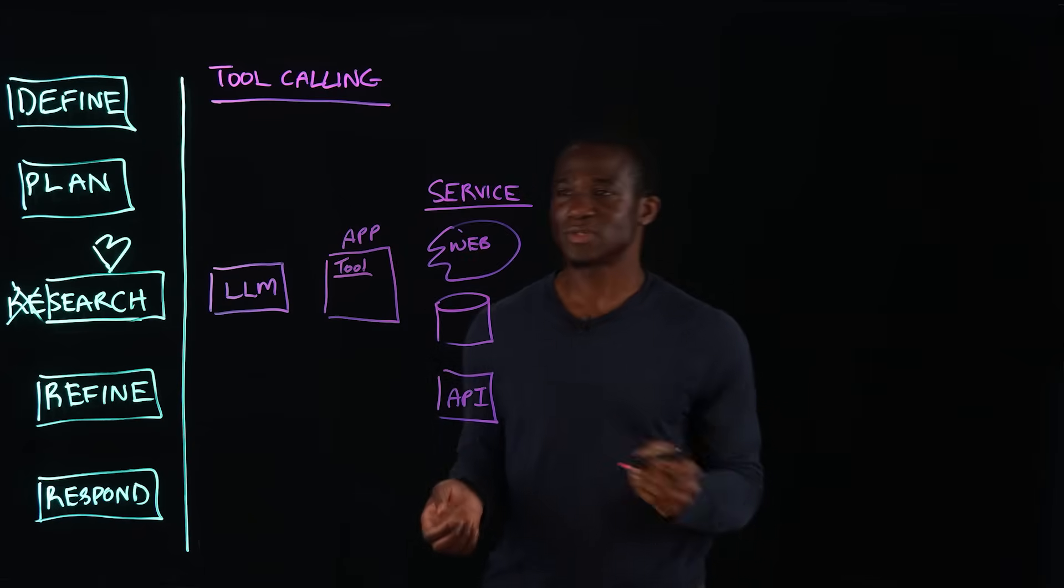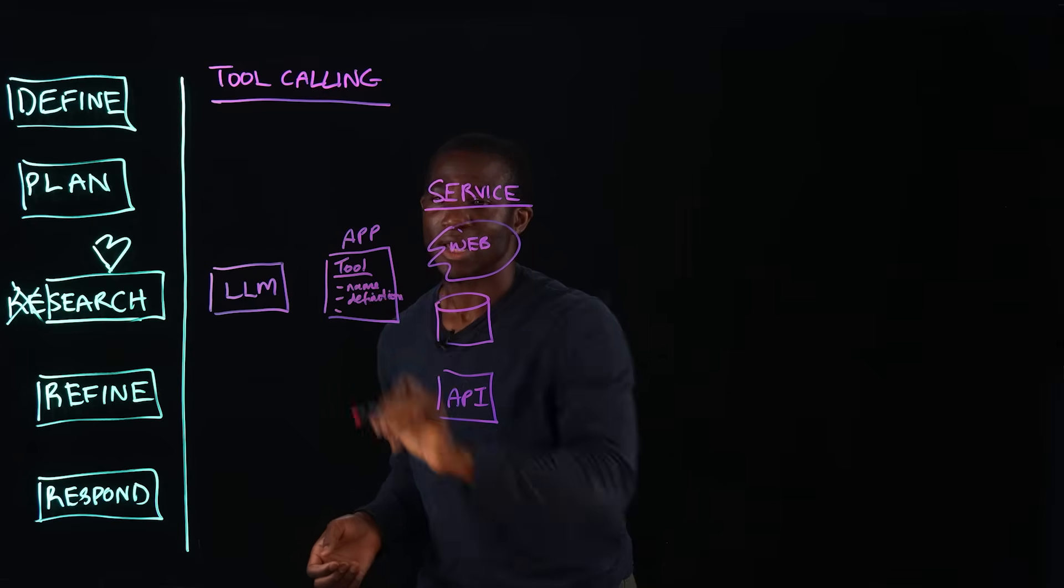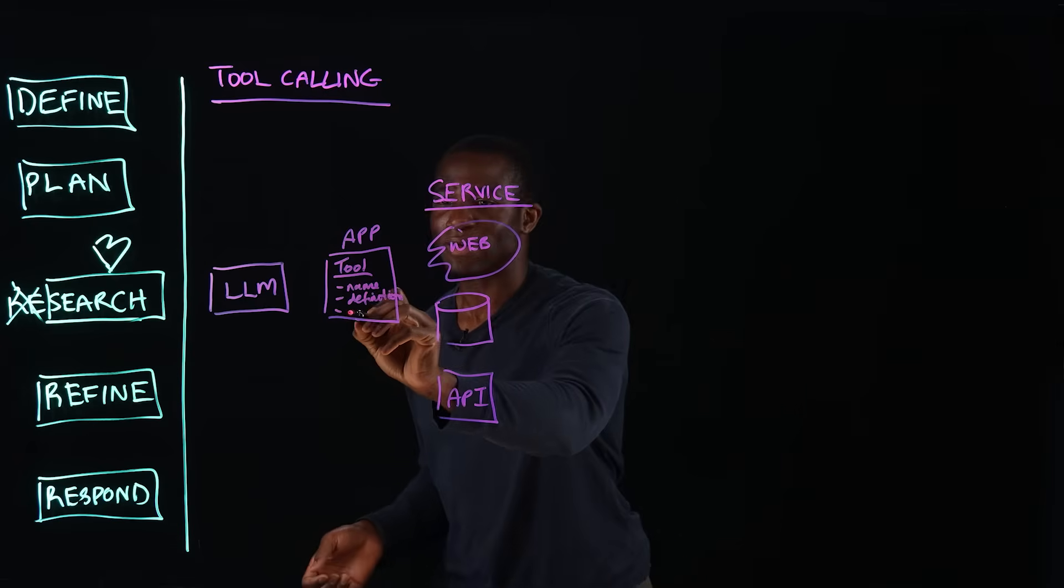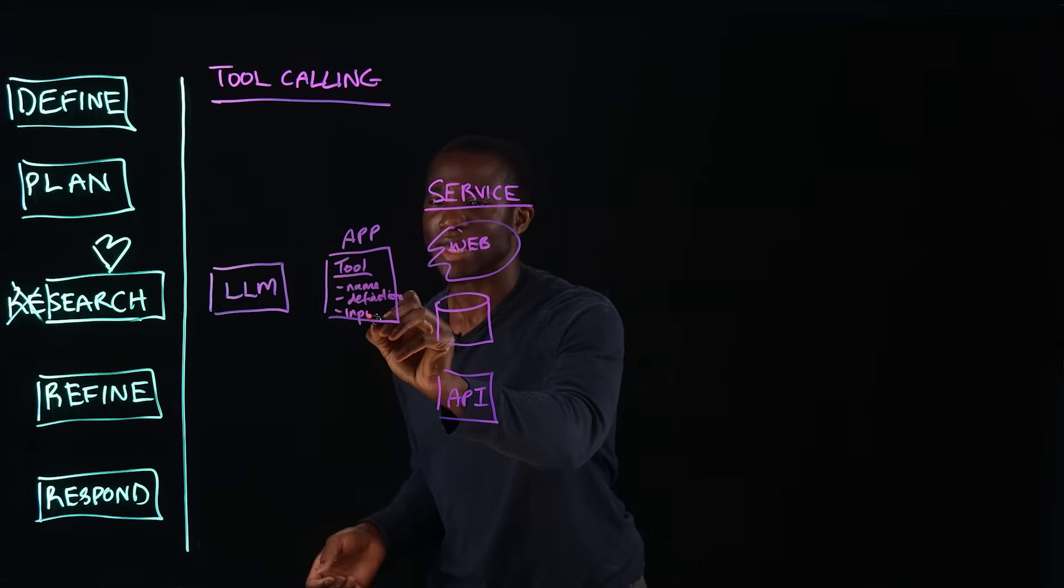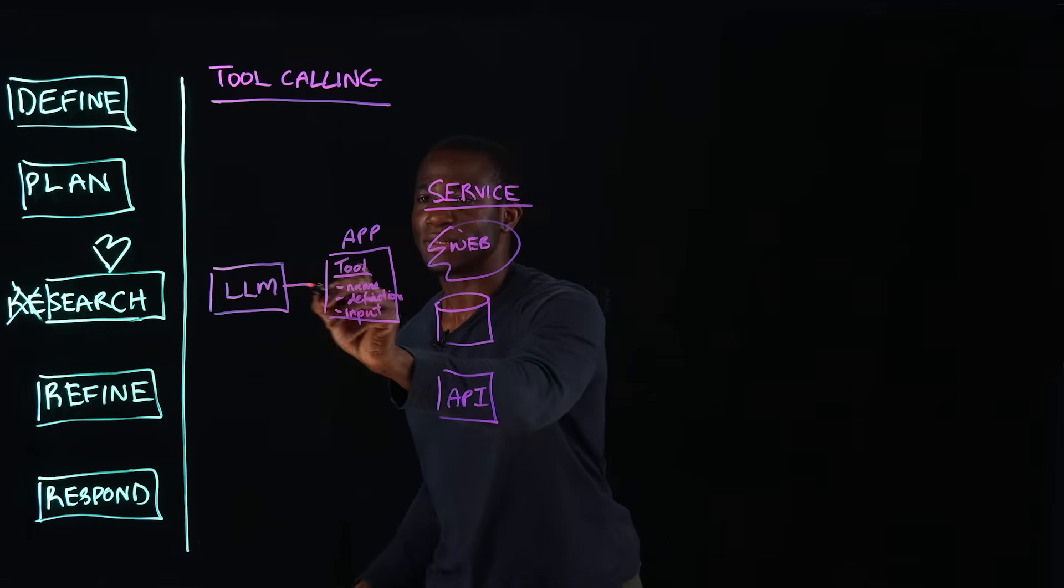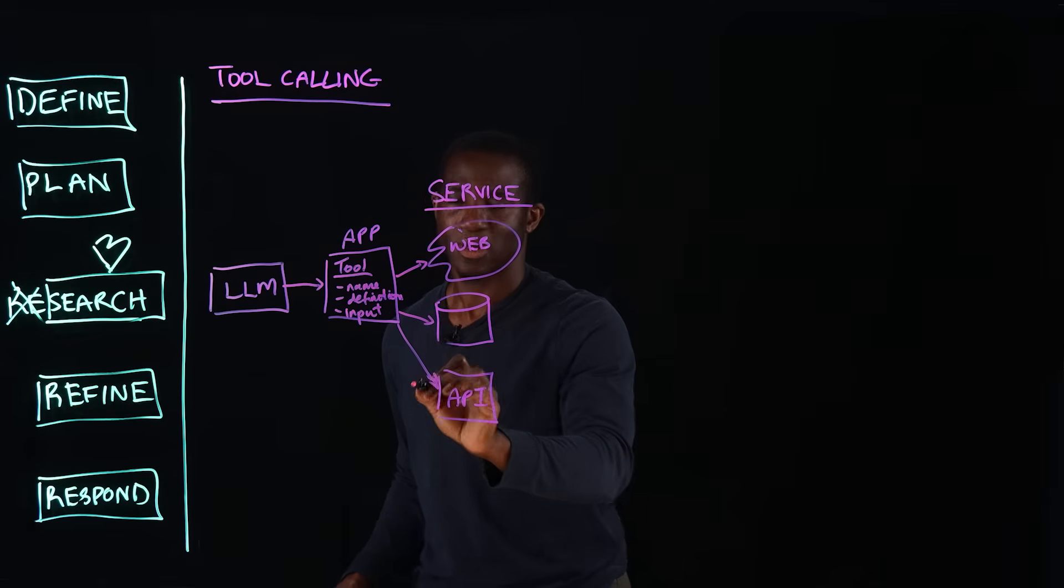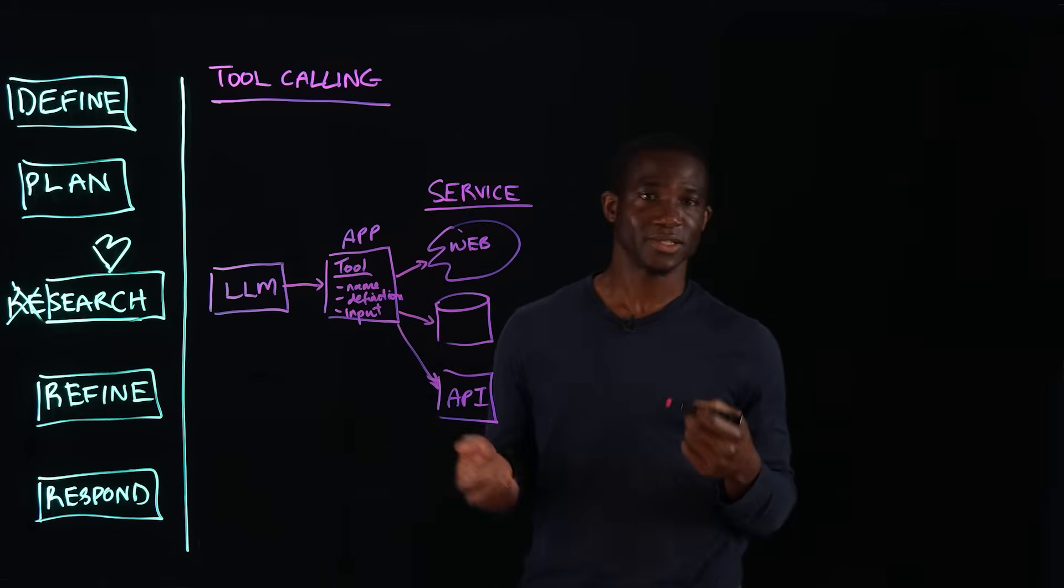Where each of these tools will have a name, they'll have a definition, a tool definition, and of course they'll have some definition around the expected input. So tool calling, the LLM calls this application, and then this application connects to these services.